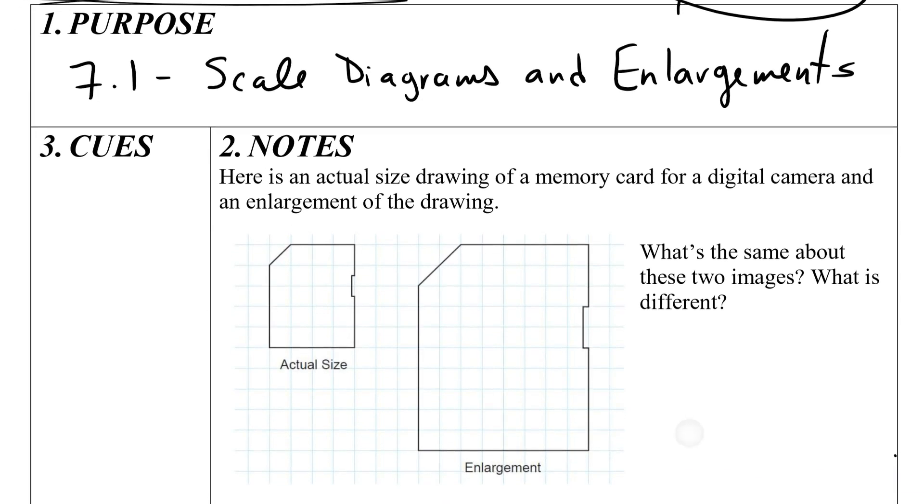So today we're going to be talking about scale diagrams, particularly enlargements. The word that I'm wanting to really hit on today is the word large. It means you take an original size, so you can have a first draft of a diagram that's a little smaller, or the actual size of an SD card, and then you can make it bigger. That's why the large - that's how we can tell the difference between enlargements and reductions.